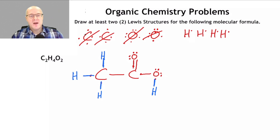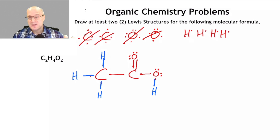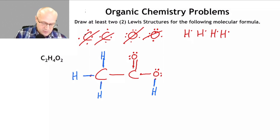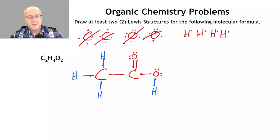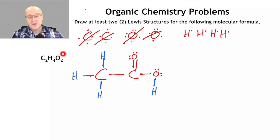All my non-hydrogen atoms have octets, and all my hydrogens have their two electrons. I need two carbons — one, two. Four hydrogens — one, two, three, four. And two oxygens — one, two. That formula fits. This Lewis structure fits my molecular formula.